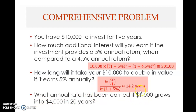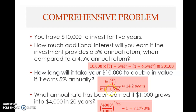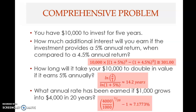The third question: what annual rate has been earned if $1,000 grows to $4,000 in 20 years? This is a different problem — the interest rate is unknown. $1,000 is the present value, $4,000 is the future value, and 20 years is the number of periods. Using the interest rate formula: (4,000 / 1,000)^(1/20) − 1, you get 7.1773%, roughly 7.18% per year. That is the interest rate that would have been earned.